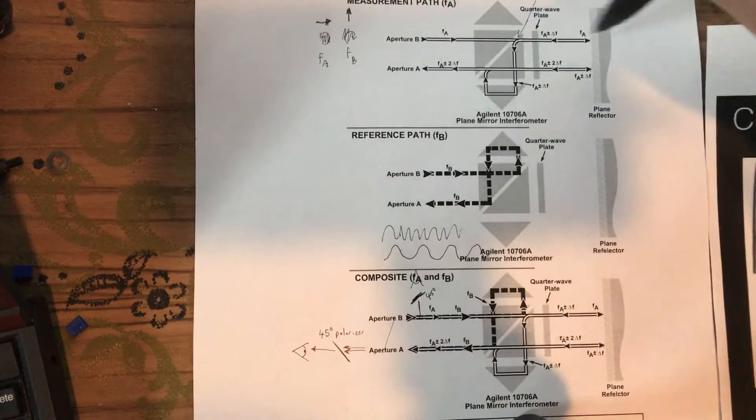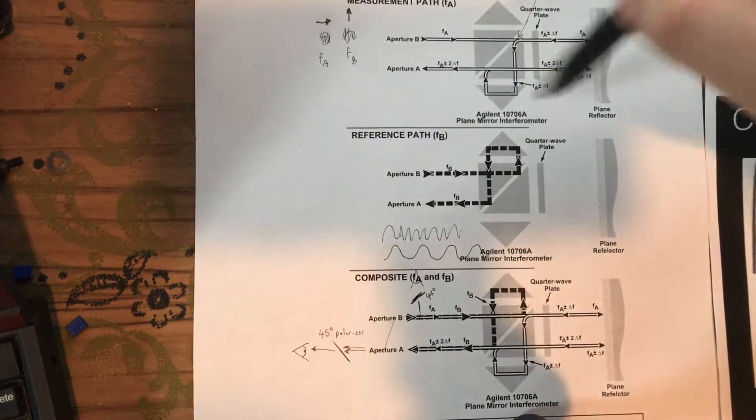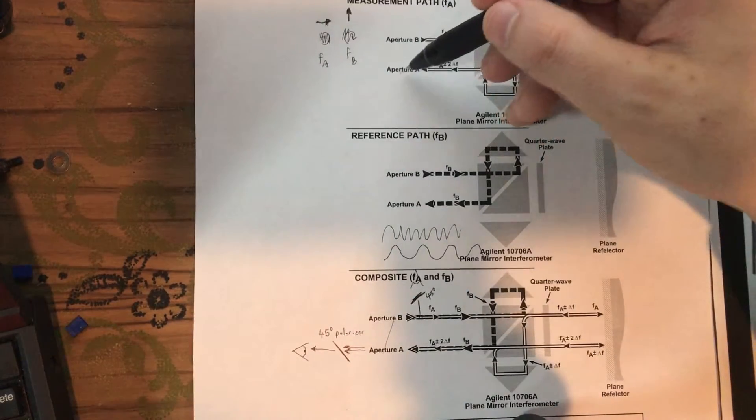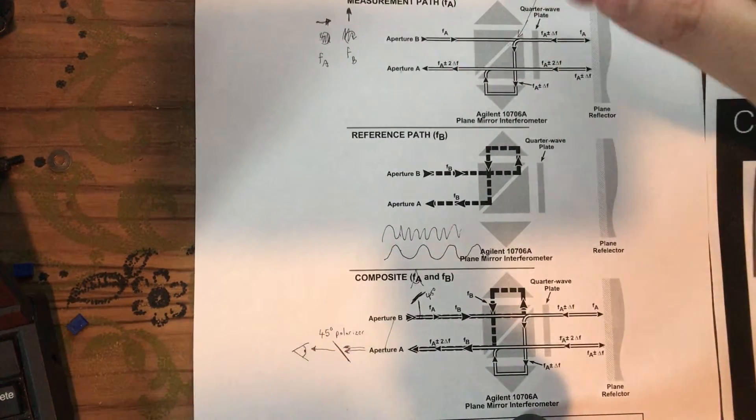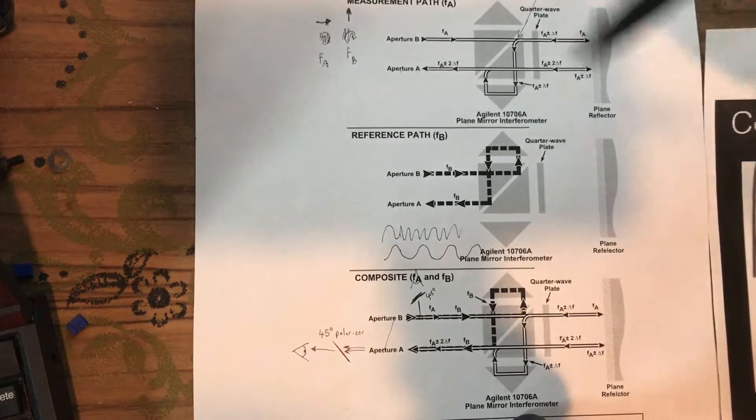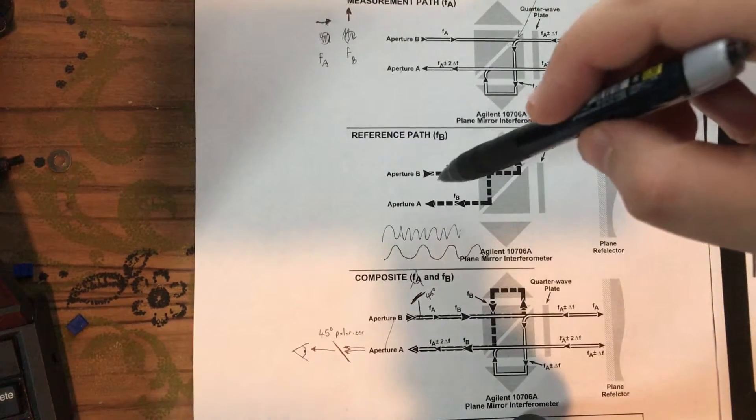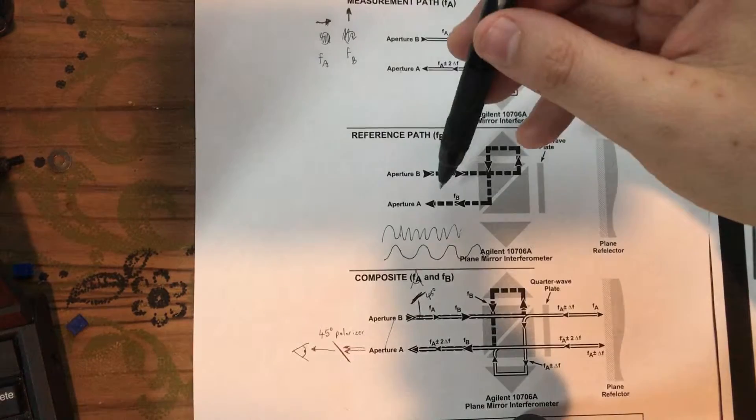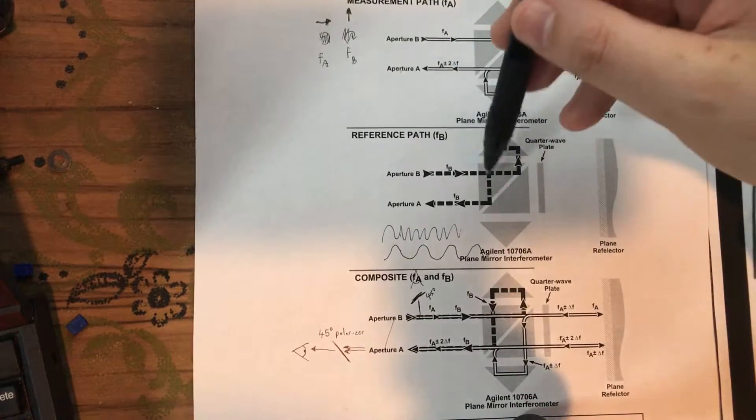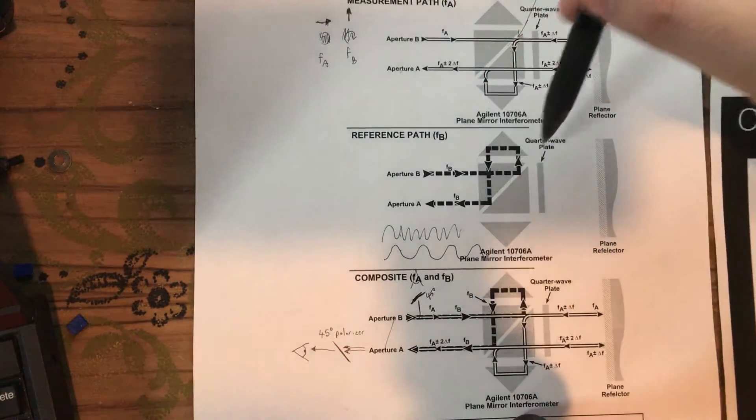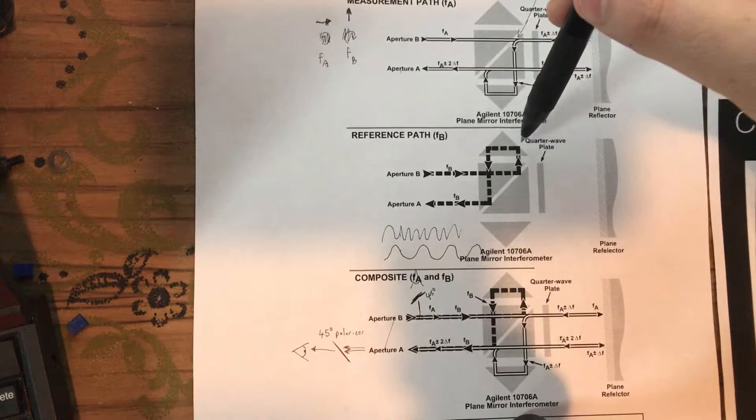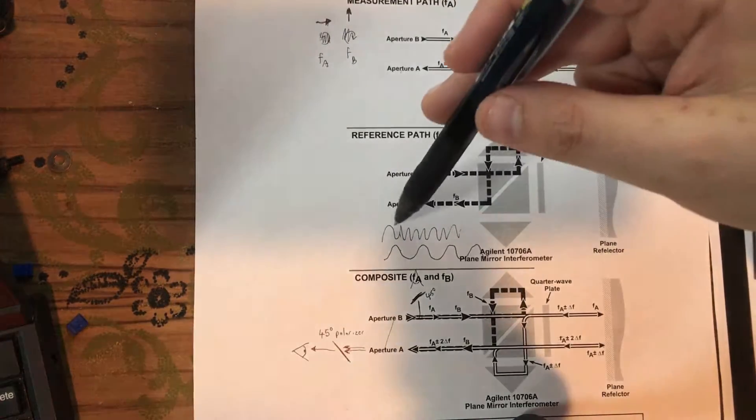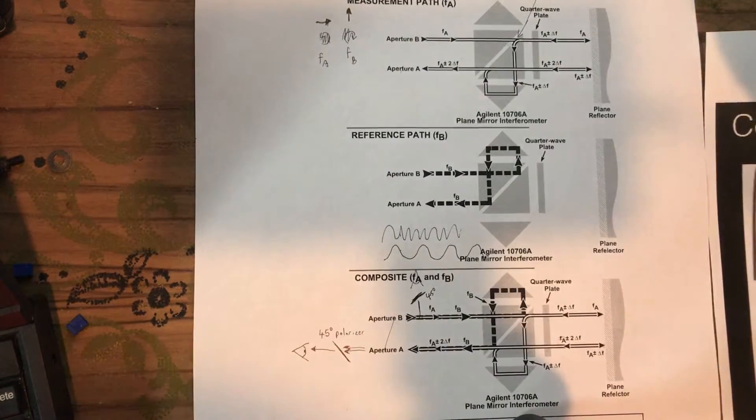So that's the measurement beam, and you can see it reflecting off the surface and through the system and out again through the opposite side of the interferometer. The reference beam on the other hand is very simple. It was in the opposite polarization so it's always going to be reflected off the polarizing beam splitter. So it just heads in, hits a retro reflector, and then heads out. That's your reference path.